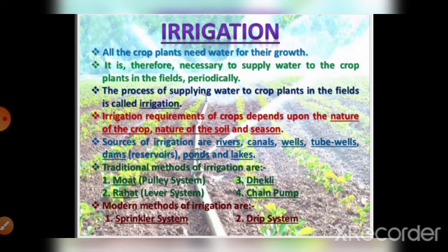The next step is irrigation. The process of watering plants after a regular interval of time is known as irrigation. Water plays a very important role in the process of photosynthesis, and photosynthesis is very important for the production of food in the plant. So irrigation is very important. Irrigation can be done by two methods: traditional methods, also called conventional methods, or modern methods.